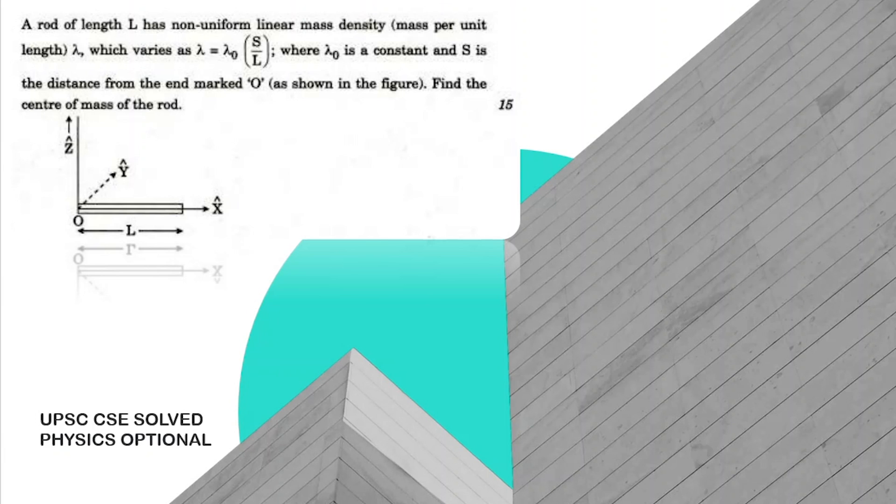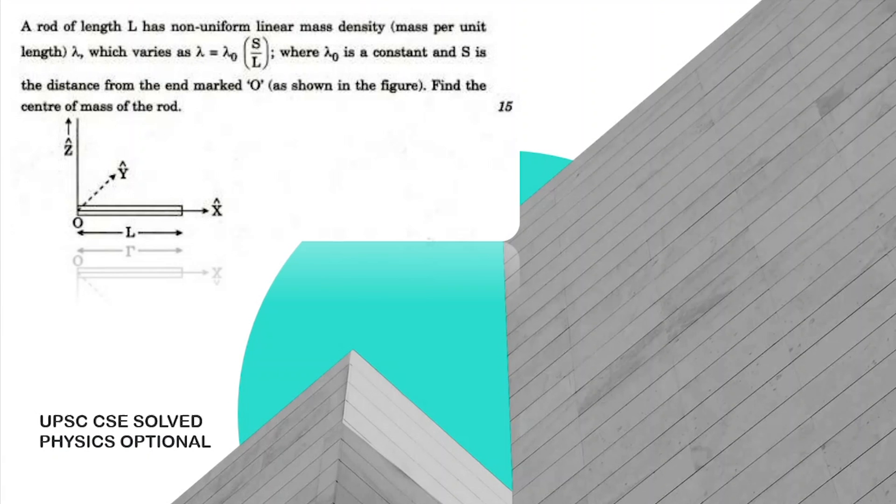Hello everyone, in today's video we will be solving a previous year question from the UPSC CSE exam. In this question, we are given a rod of length L which has a non-uniform linear density, meaning the mass varies with its length. We are given the linear mass density which is equal to lambda₀(s/L).